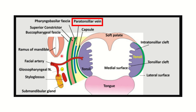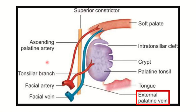We are confined to the paratonsillar vein and the facial artery. In this picture we can see the tonsillar branch of the facial artery, and here is the external palatine vein. We know the arterial wall is more thick, whereas the venous wall is less thick.